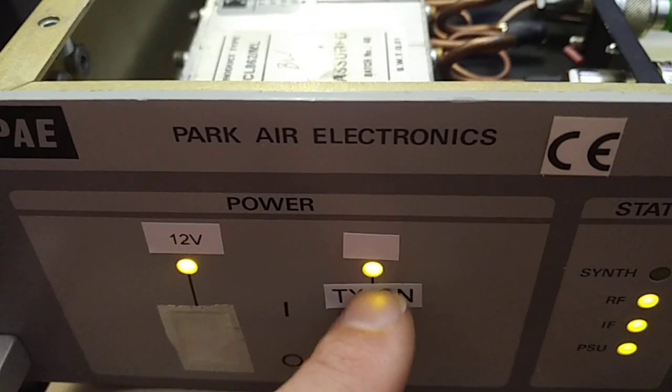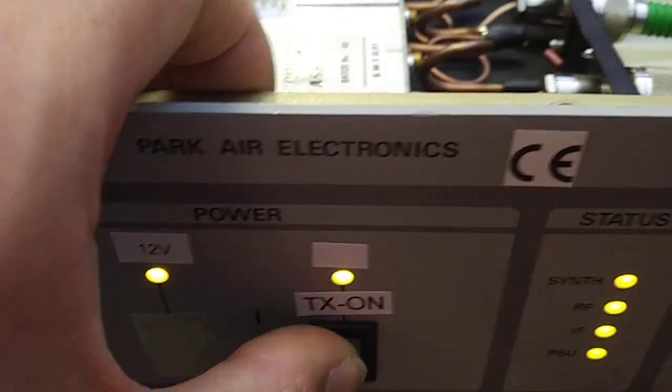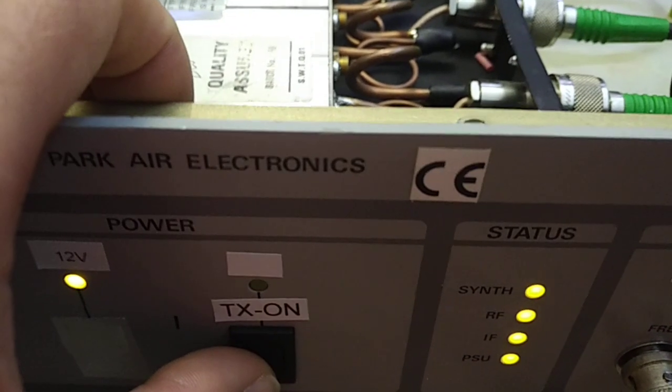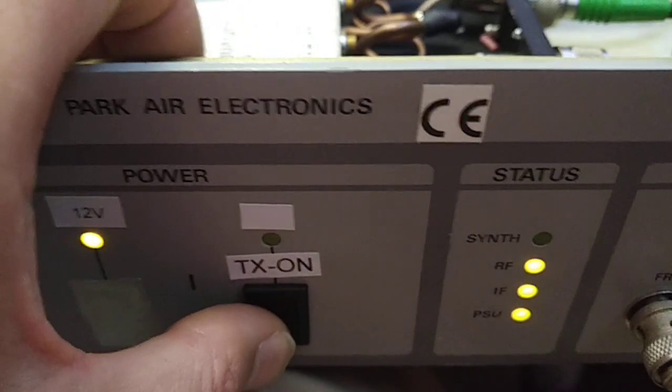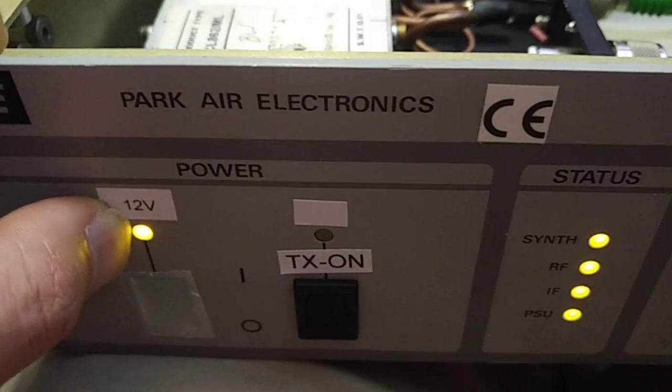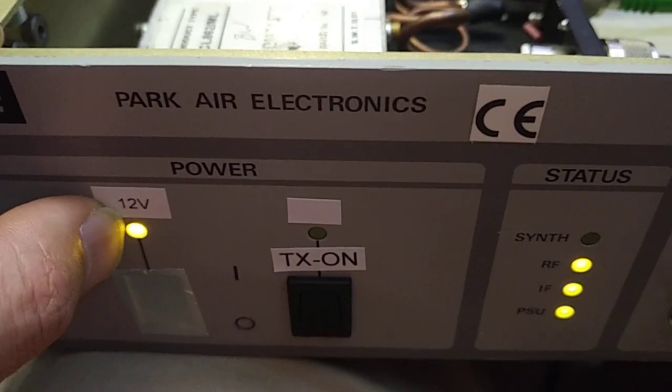We've got another switch over here. This basically allows me to turn off the transmitter, so the TX actually interrupts the control line to the transmitter, so I can turn it on and off. I can still, of course, listen locally through the speaker here. And finally, we've just got our 12 volts indicator lamp here, which tells me the supply is on.